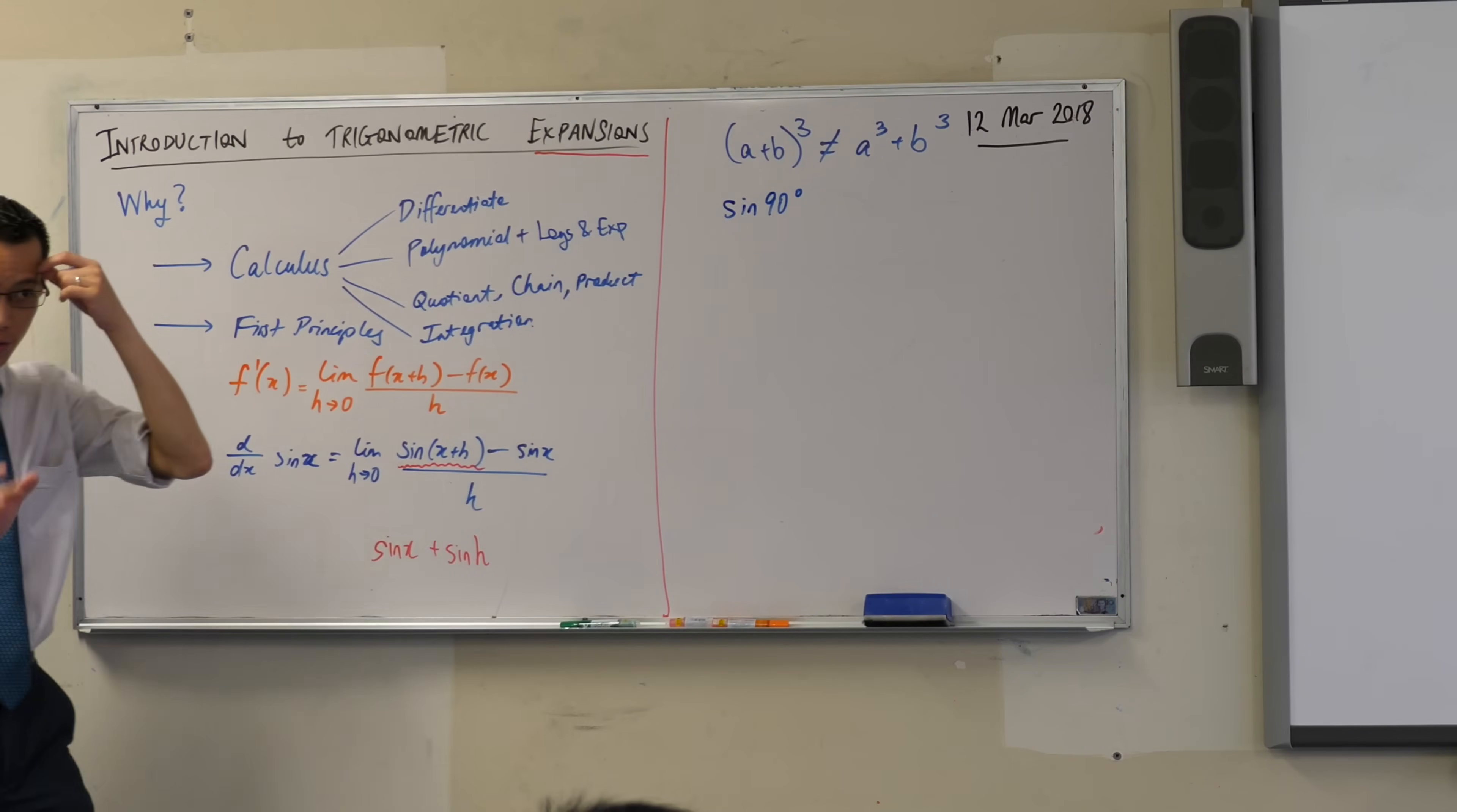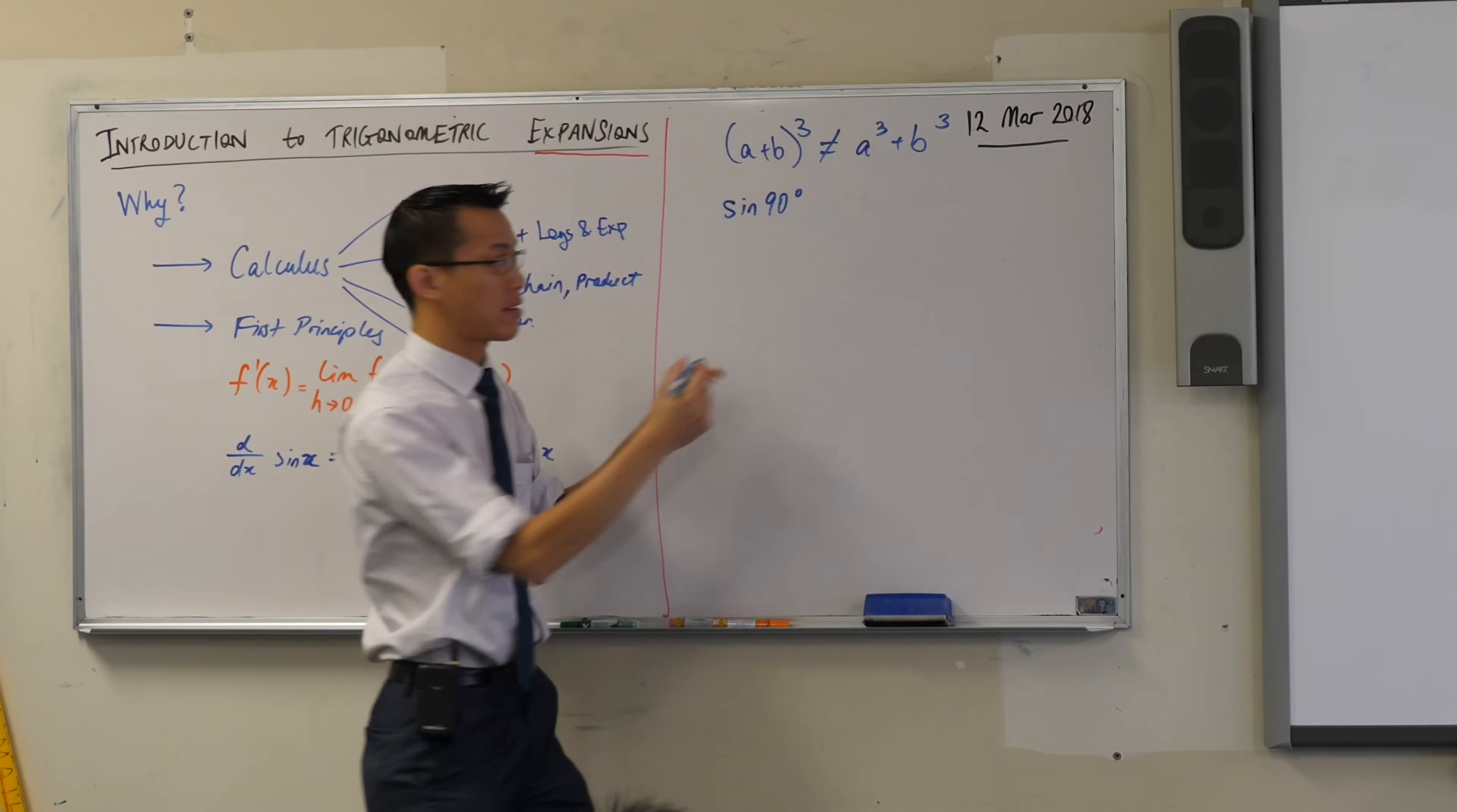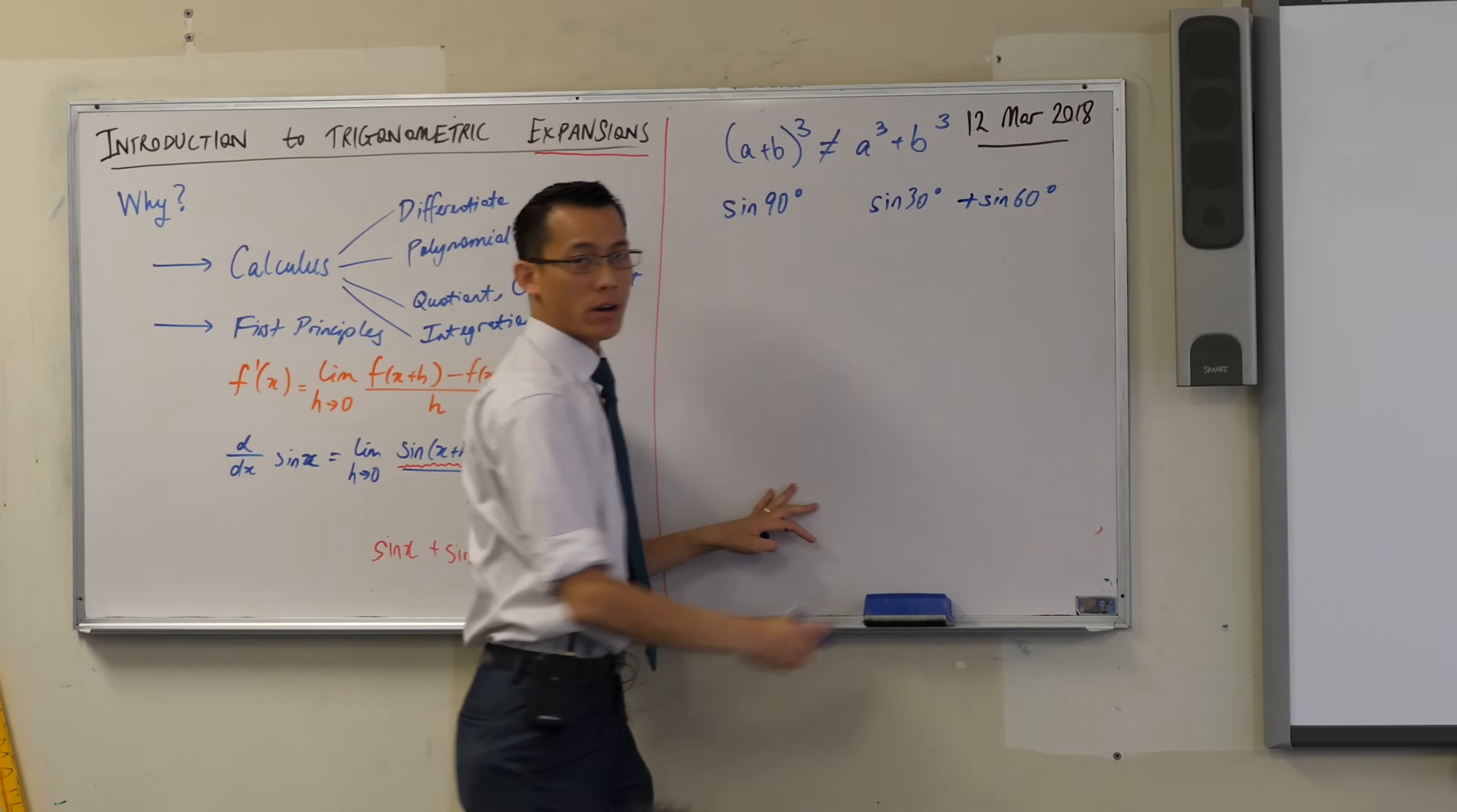But there's one other reason, a really obvious, like, year 10, almost year 9 reason why you can know that this is not true. Sine 90 degrees. Don't say it out, but you know what this is equal to. You know that value. In fact, it's one of the first ones that you learn. Well, let me think about breaking that 90 degrees into two pieces. What if I were to break it into two pieces? For instance, I could say break it into sine 30 and sine 60. 30 plus 60 is 90.